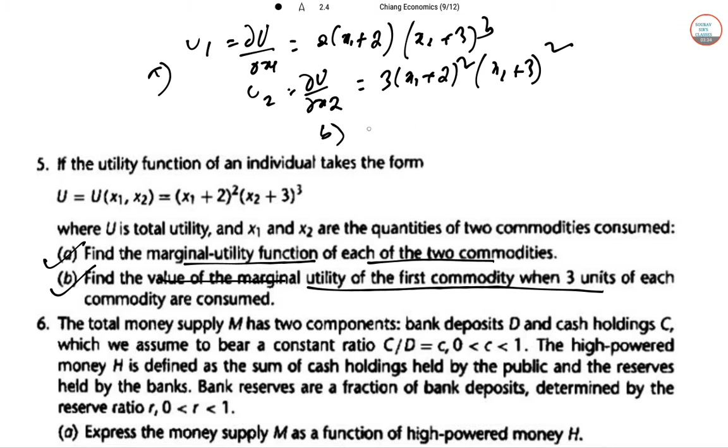In the b part, we have to put this value, so 3 comma 3. So U1 equal to 3 comma 3, so 2(3 plus 2*3 plus 3) cubed, so 9*27, so this is 2160. So 5 is also done.